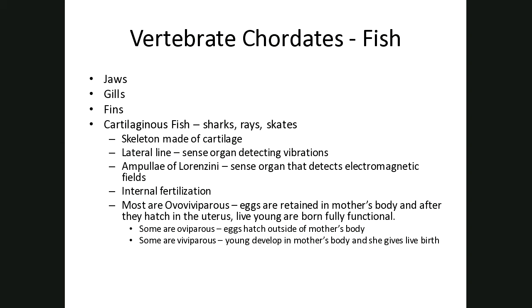We move up now into chordates that are vertebrates — they have a vertebral column. The first group we're going to talk about are the fish. How do we distinguish characteristics specific to fish? The other organisms we've looked at up to this point have not had jaws — so now we have jaws. Fish have gills and they also have fins.